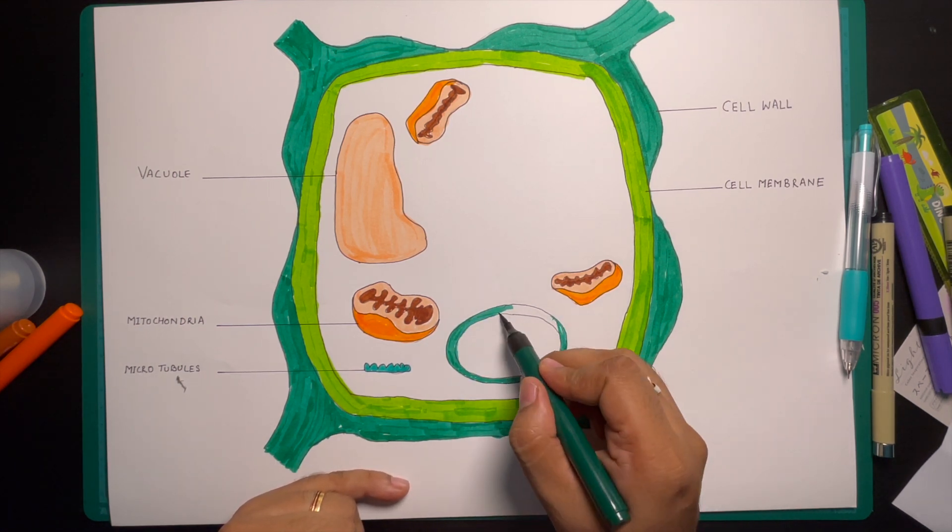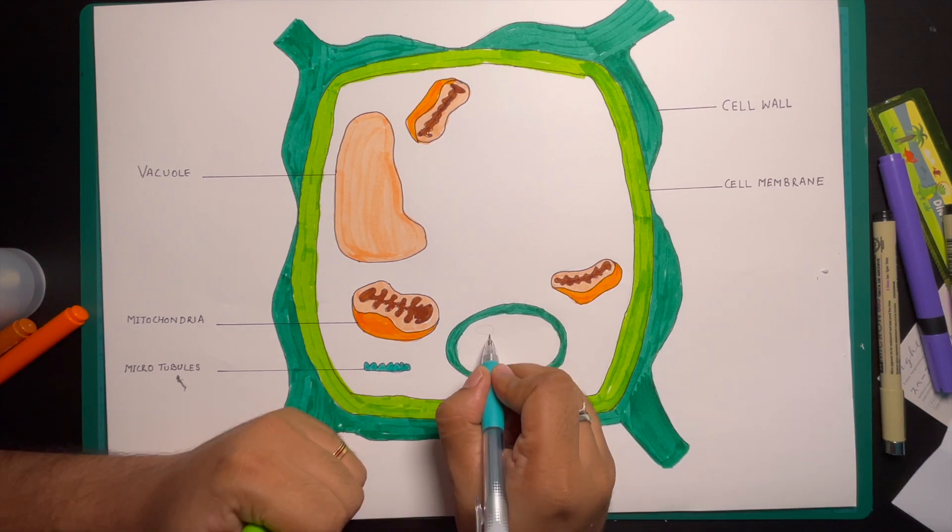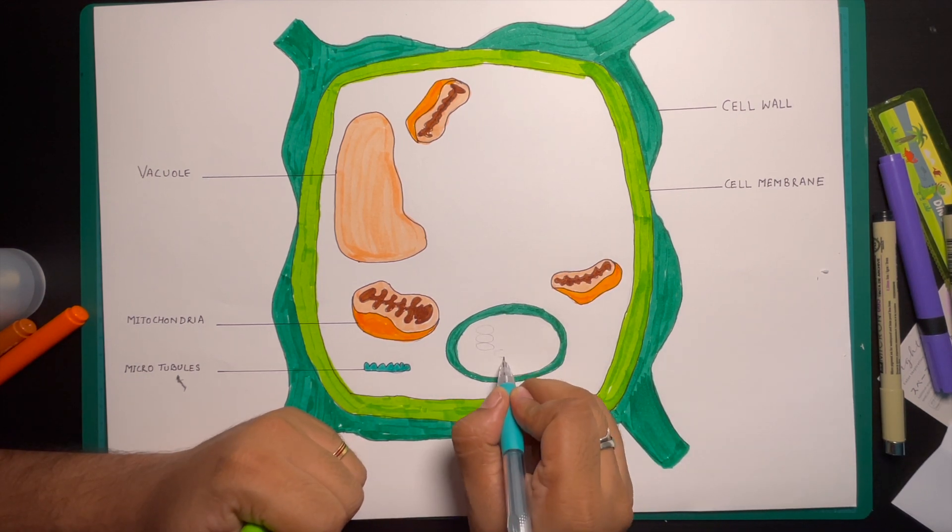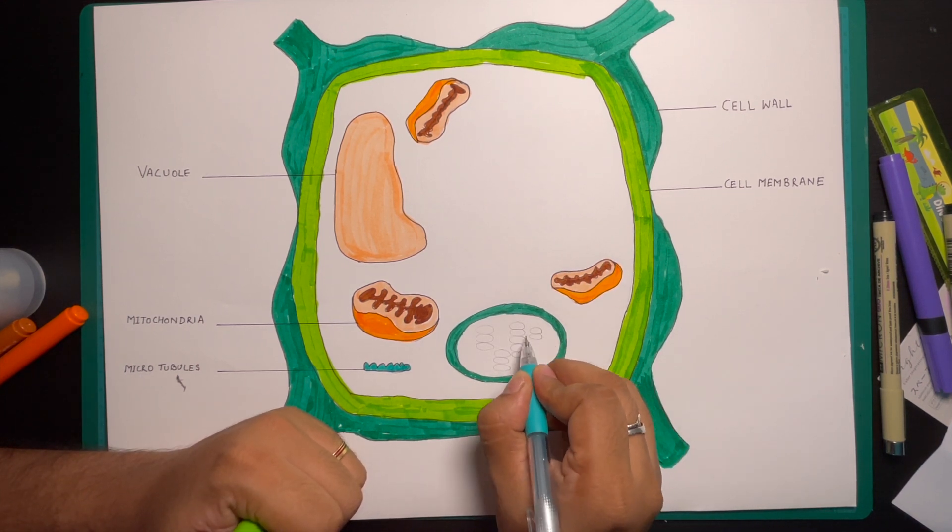Now let us discuss one of the most important organelles of the plant cell that is the plastid. They are double membrane organelles that participate in photosynthesis, food storage and pigmentation. Based on the type of pigments, they are of three types.